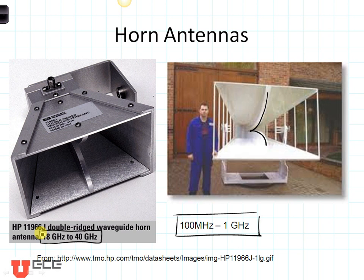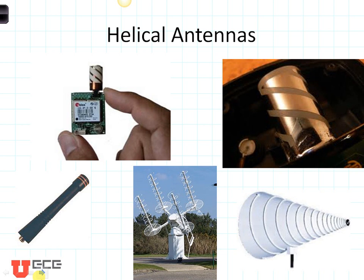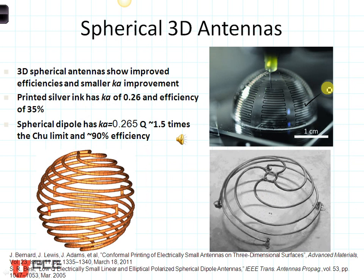Helical antennas are another type of broadband antenna. This one uses the metal part of the helix as the antenna, and this one uses the empty non-metallic part as the helix. Many types of cell phone antennas are helical. Here you can see helical antennas used for radio communication. Notice this grid, which acts as the ground plane for the antenna. Here is a spiral helical antenna and a 3D helical antenna — this one you can see is just printed in 3D.